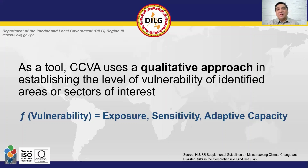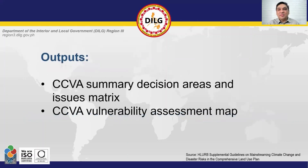Vulnerability of the system to the expected climate stimulus is the interplay of exposure, sensitivity, and adaptive capacity. The outputs involved in this section are the CCVA summary decision areas and issues matrix, and the CCVA vulnerability assessment map.